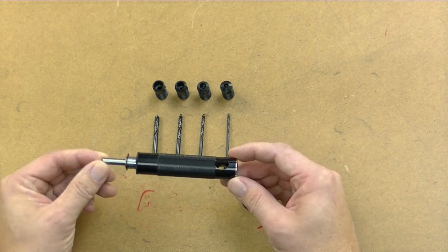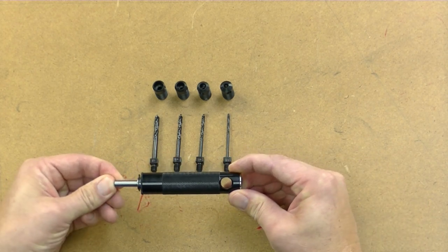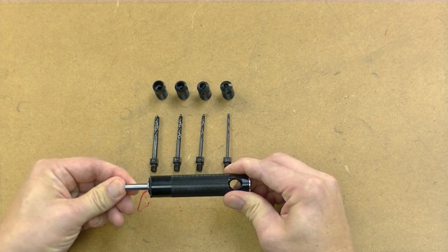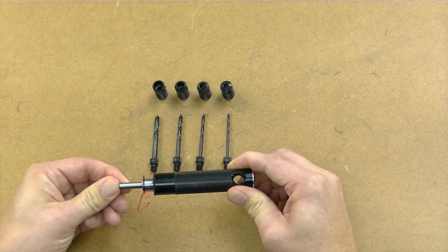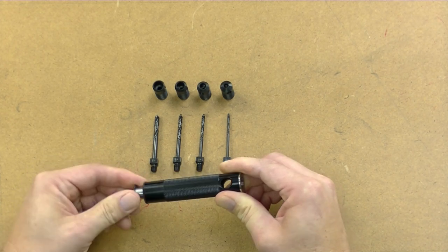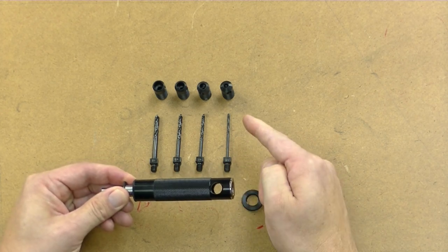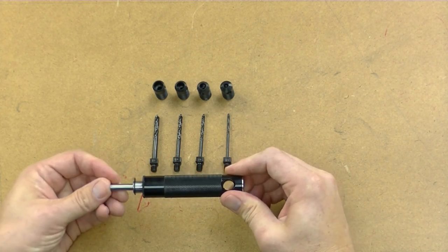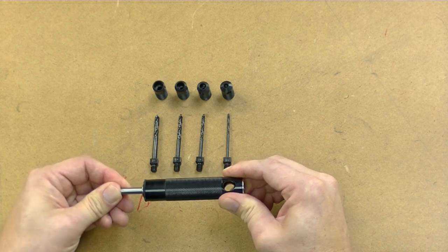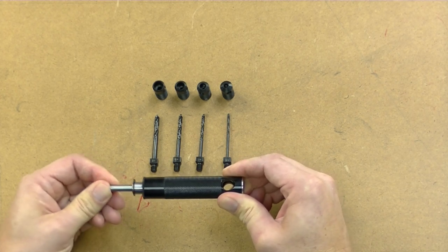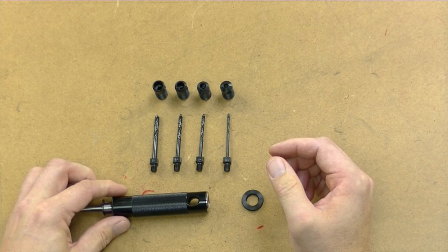So the basic idea behind the rivet removal tool is it's similar to a MicroStop countersink except this is not adjustable in depth. On this end, it's adjustable in depth with the guide piece that you put on. So it's the same depth increment each time back here. So I'll show you how to set this up.